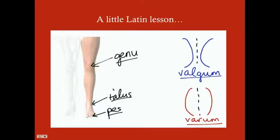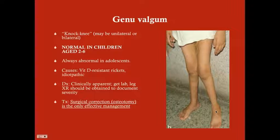Valgum is an inward curvature of bones relative to one another — so if the legs curve in towards each other it's valgum, and if they curve away from one another it's varum. A way to remember this: varum has 'air' in the middle, valgum does not — you've got space in the middle when they curve away from each other.